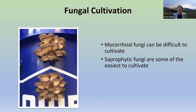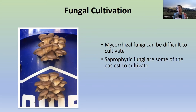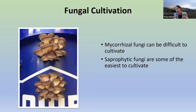Mycorrhizal fungi exist in a symbiotic relationship with a plant species — they're not saprophytes. They don't feed on dead and decaying matter; they need a relationship with a living plant host to survive, thrive, and grow. That makes them much more challenging to cultivate because you're dealing with the symbiotic relationship between two organisms. But the majority of mushrooms that beginning cultivators are interested in growing are saprophytic fungi, which are far easier to deal with.